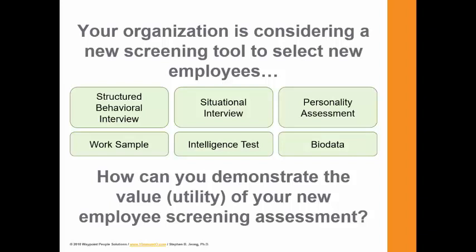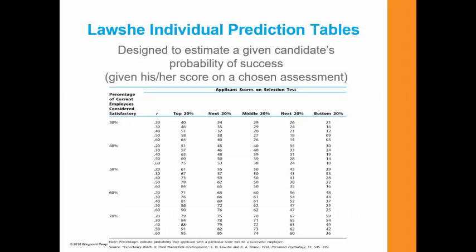That way you have two pieces of information: one is their scores on the new assessment, but you also have for each employee their most recent performance evaluation score. When you correlate those two for every individual that has taken the assessment, you have what's called a validity coefficient. The Lawshe Individual Prediction Tables is designed to estimate a given candidate's probability of success given his or her score on a chosen assessment — depending on where that person scores, you can predict how likely that candidate will be successful in the new role.